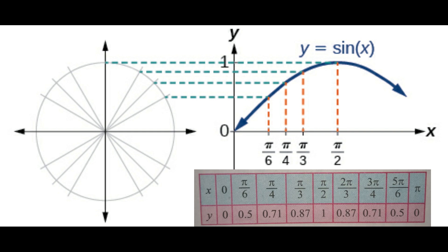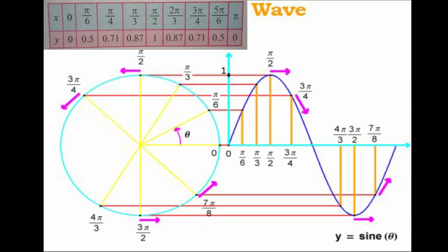So when x increases from 0 to π/2, y also increases from 0 to 1 — the sine function is increasing in this interval. Now in the second quadrant: when x equals 2π/3, y is 0.87; when x equals 3π/4, y equals 0.71; when x equals 5π/6, y equals 0.5; and when x equals π, sin π equals 0. So from π/2 to π, as x increases, y decreases — the sine function is a decreasing function in this interval.